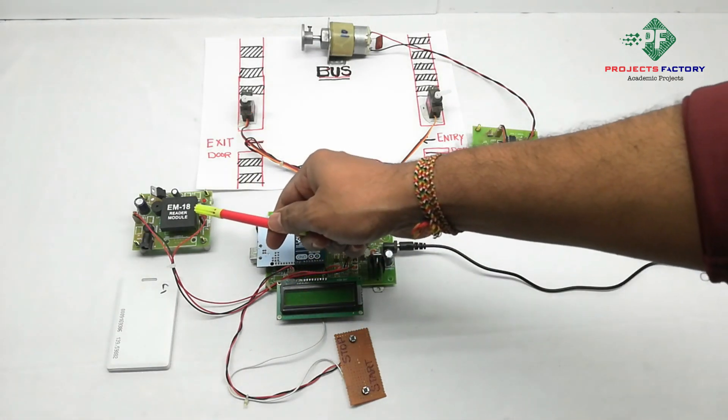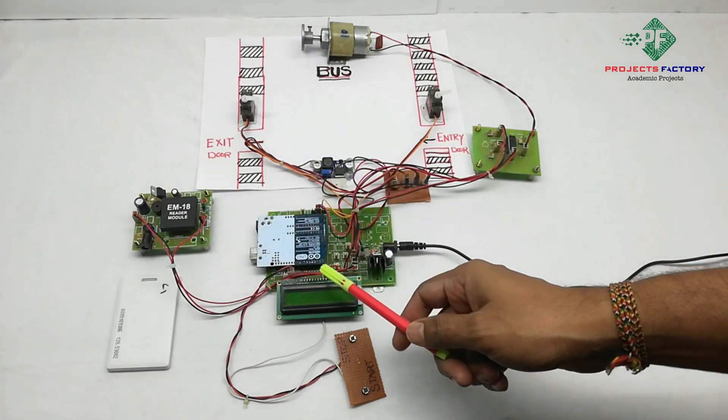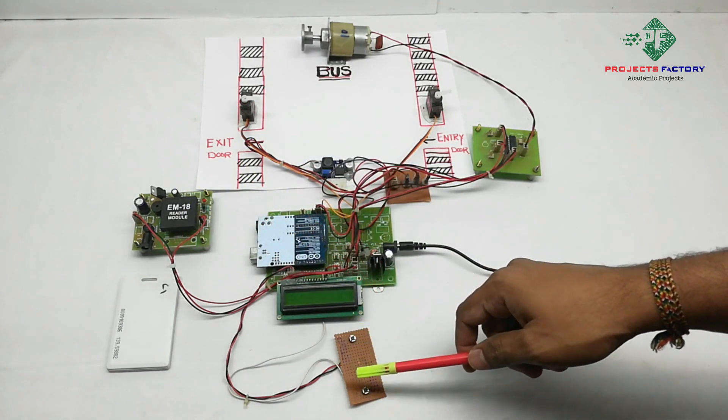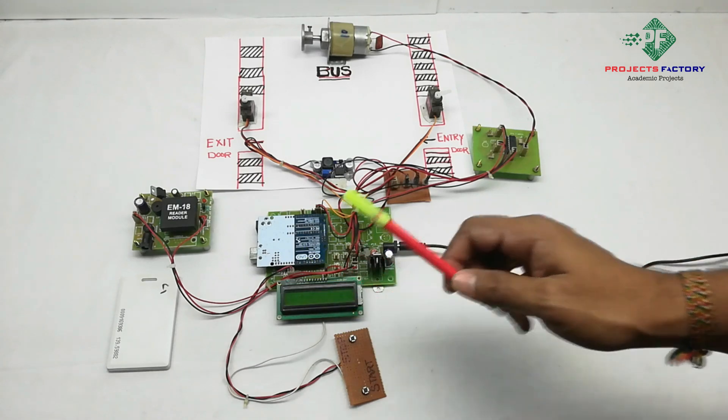RFID module EMA18 is connected to Arduino UART port. These two switches represent the start and stop, connected to Arduino digital pins.